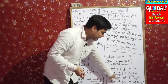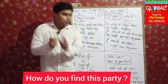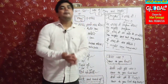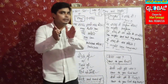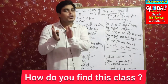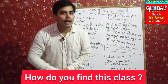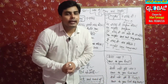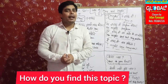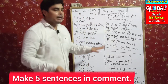Similarly: 'Kaisi lagi tumhe yeh party?' — 'How do you find this party?' 'Kaisi lagi yeh class?' — 'How do you find this class?' If I ask how you liked today's topic: 'How do you find this topic?' Whatever the thing is, you use 'how do you find' followed by the noun.